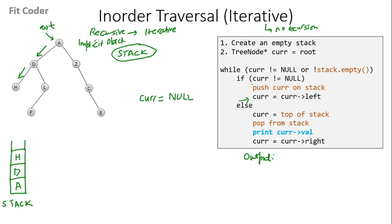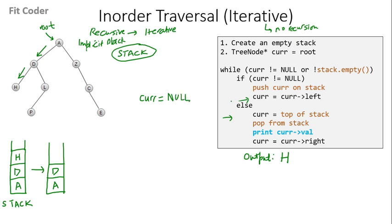We again check the while condition: current is null but the stack is not empty, so we go inside the while loop but into the else condition. Current will point to the top of the stack, which is H, and then we pop H from the stack and print H. Current will then point to the right of H, which is null. We again come in the while condition: current is null but the stack is not empty, so we come into the else condition, set current to the top of the stack which is D, pop D from the stack, print D, and current points to the right of D, which is L.